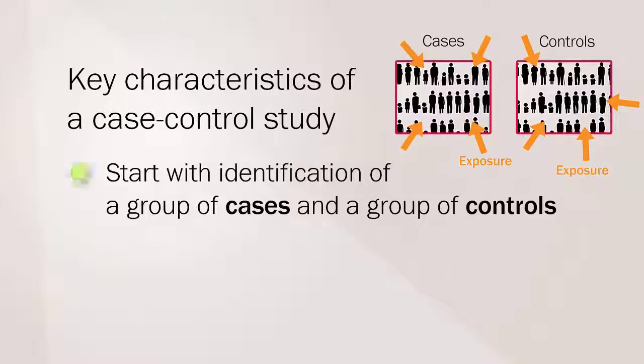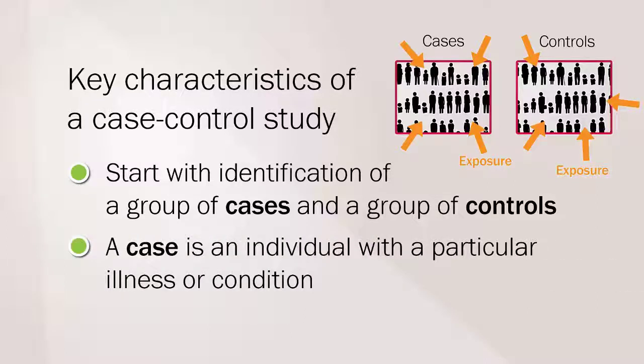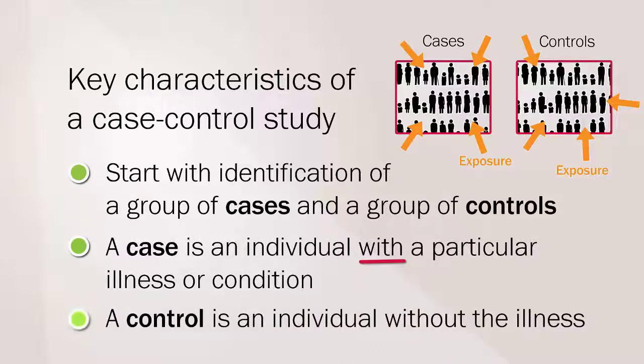A case control study starts with the identification of a group of cases and a group of controls. A case is the term for an individual with a particular illness or condition. A control is the term for an individual without the illness or condition.